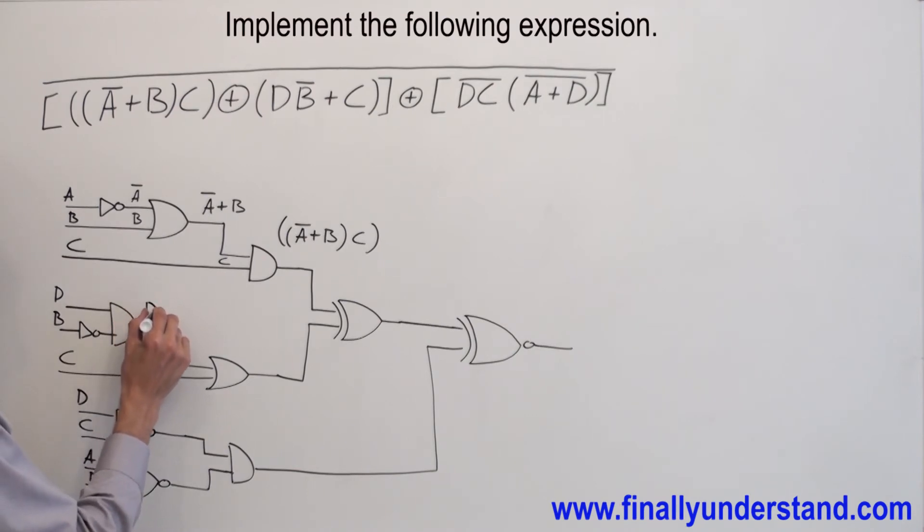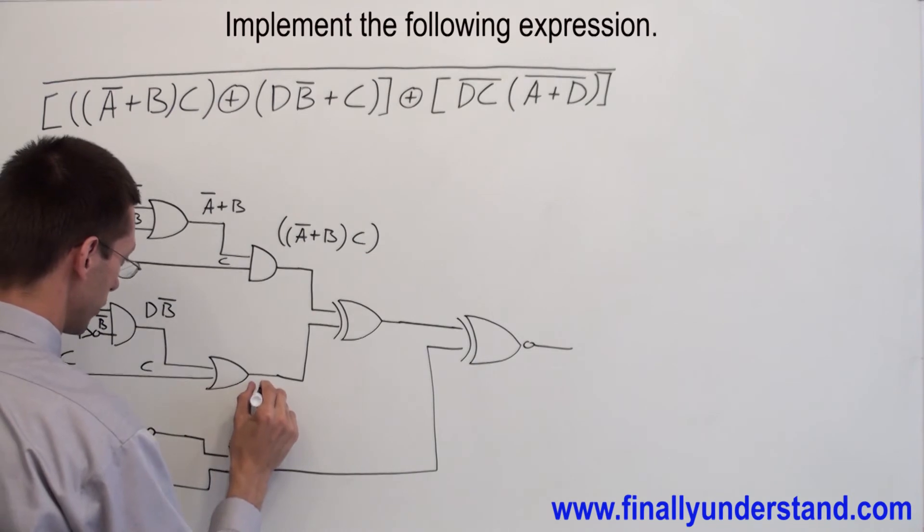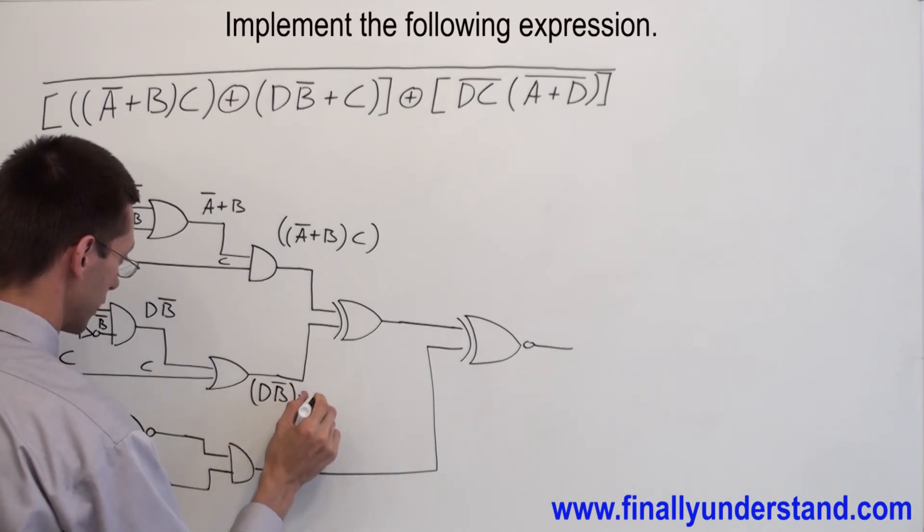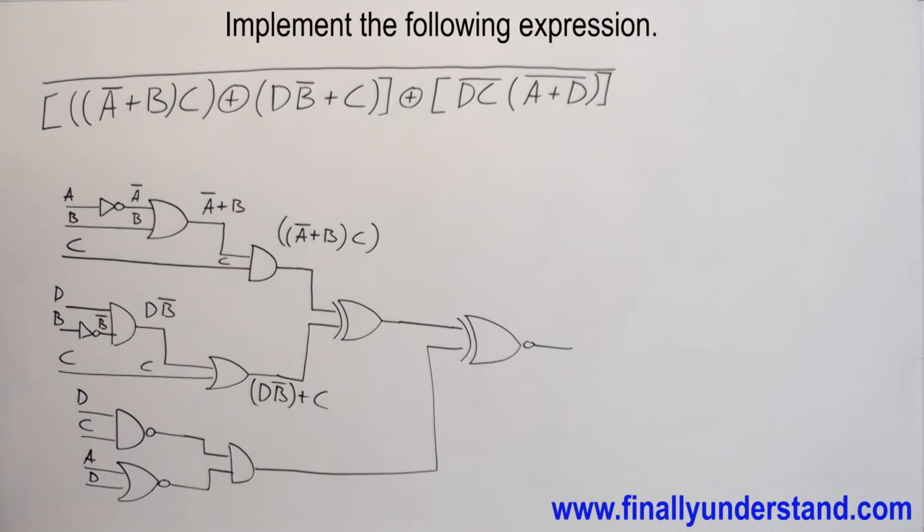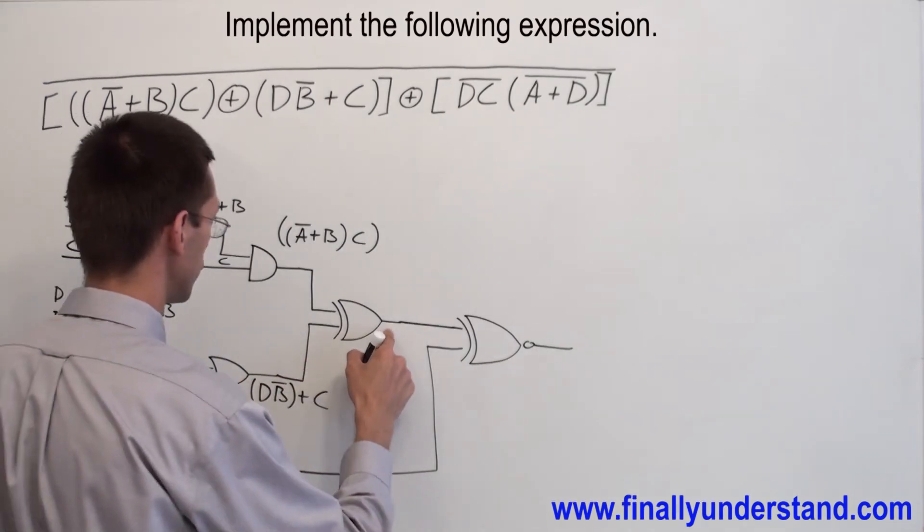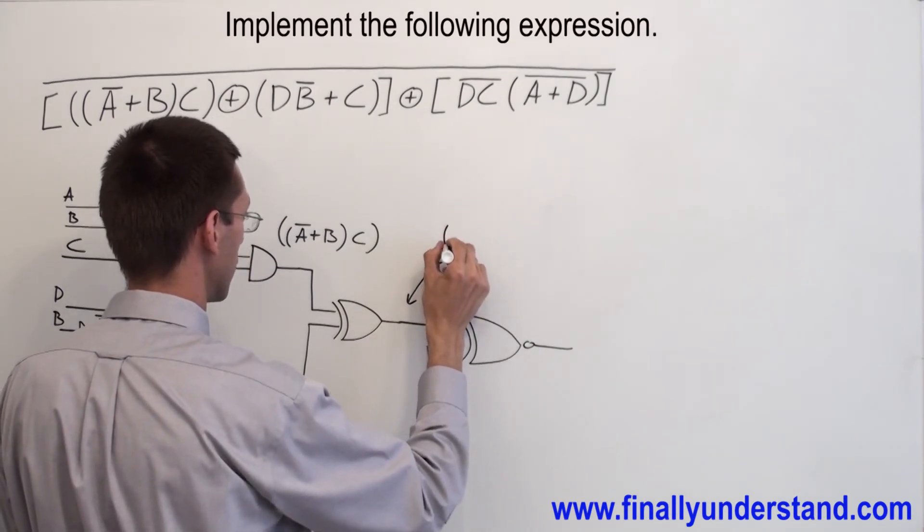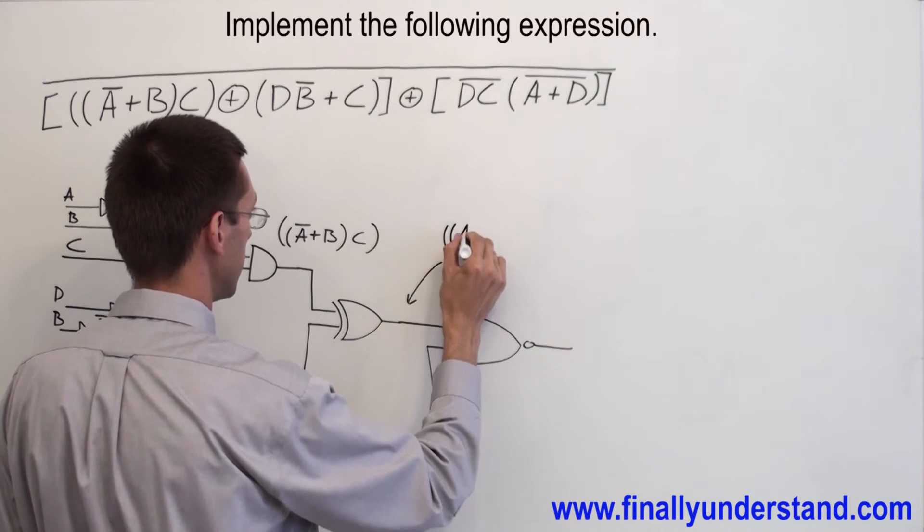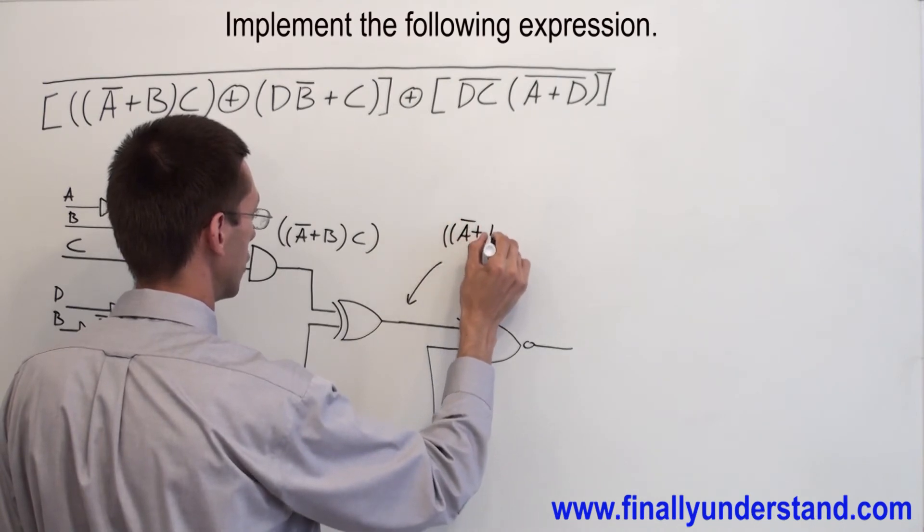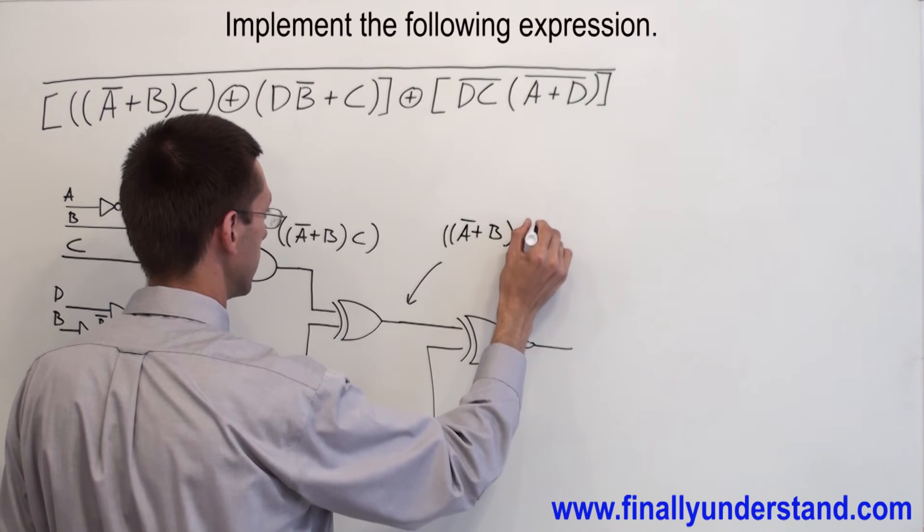Now let's take a look what we are going to have over here. I have D times B node and I have C. I have D, B node OR C.